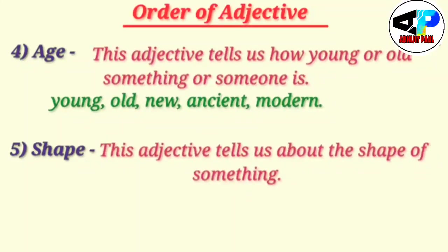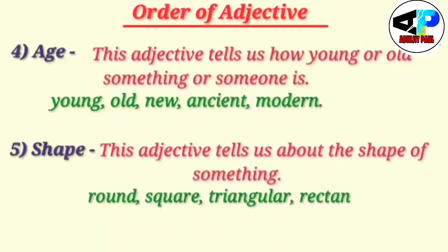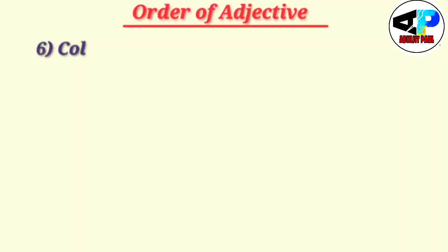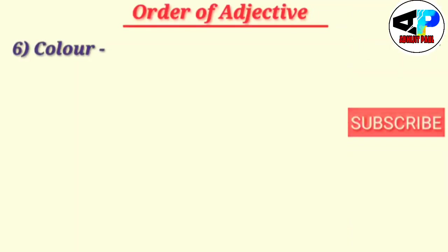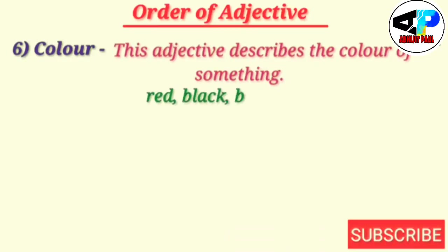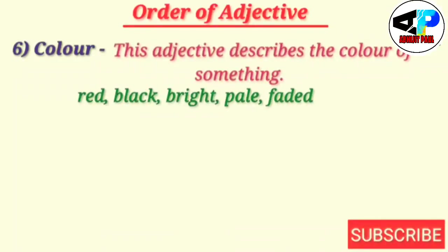The next order will be shape. This adjective tells us about the shape of something. Round, square, triangular, rectangular, wavy, zigzag — these show shape. The next sequential order will be color. This adjective describes the color of something — like red, black, bright, pale, faded.